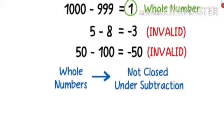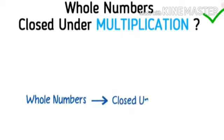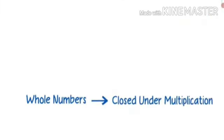What about multiplication? Are whole numbers closed under multiplication? Yes, they are closed under multiplication. When you multiply any two whole numbers, you will always get a whole number. Here are a few examples to support this argument.